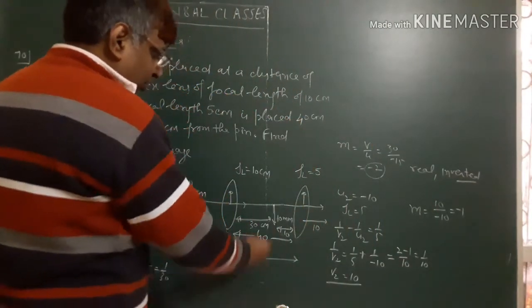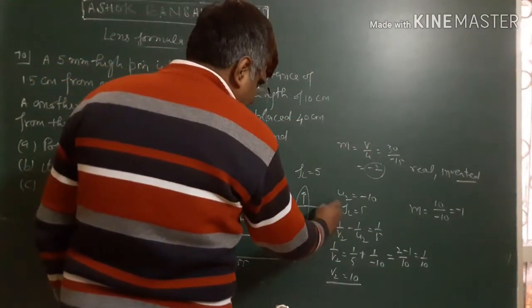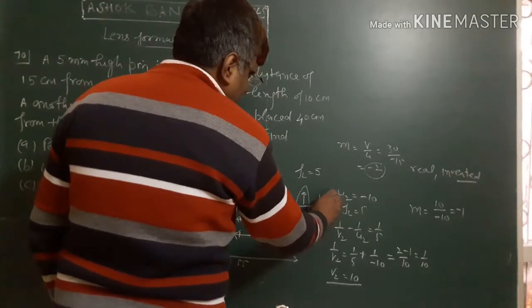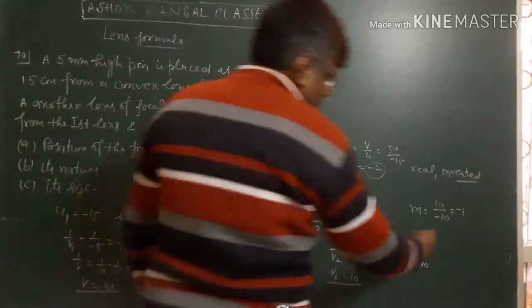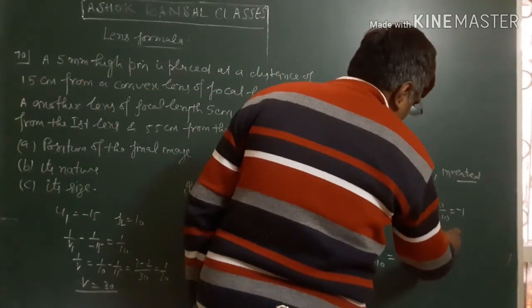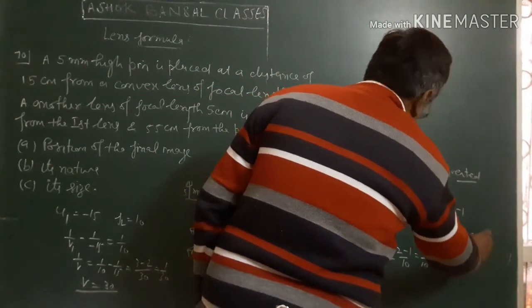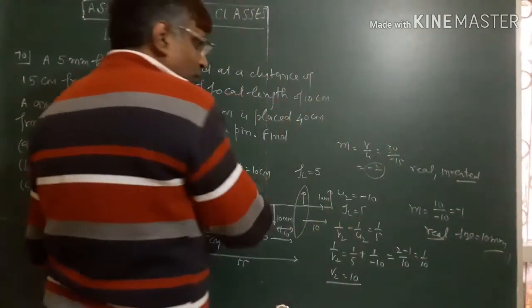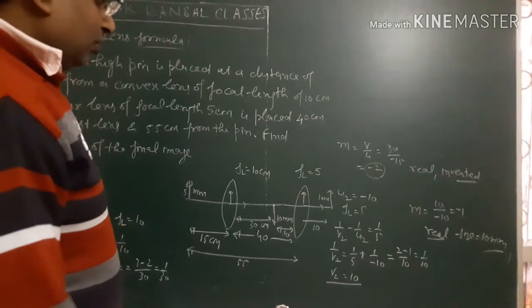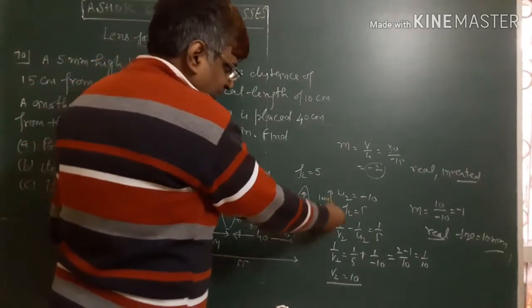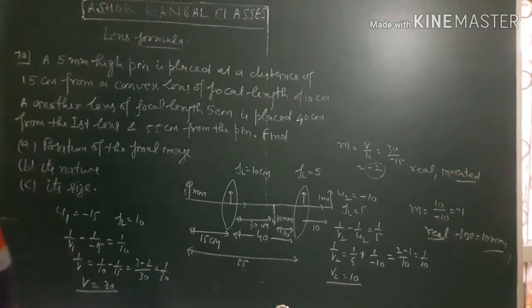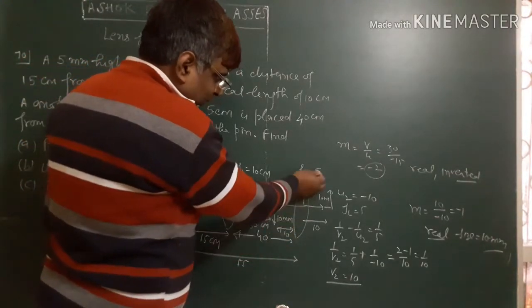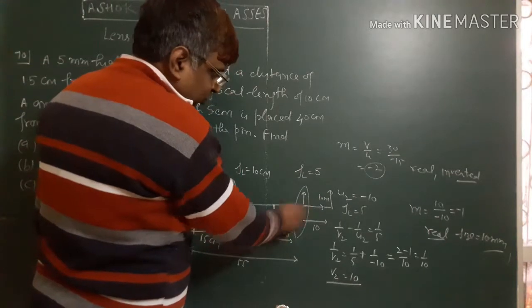This image will be inverted at 10cm distance. The size will be 10mm, so the final image is real with size 10mm. The initial size is doubled, and the second lens distance is 10cm.